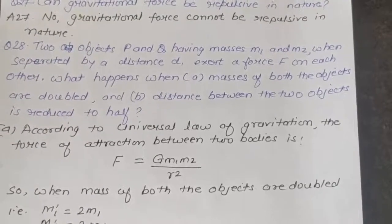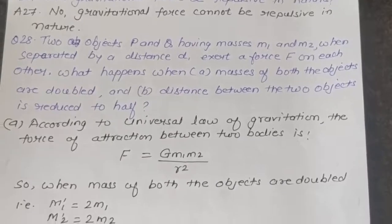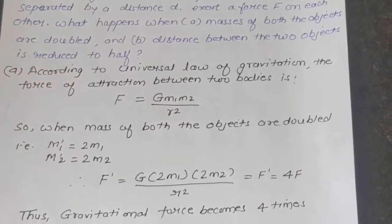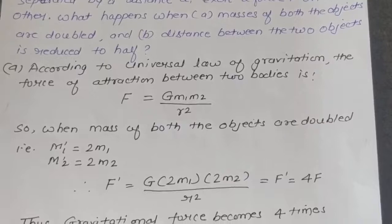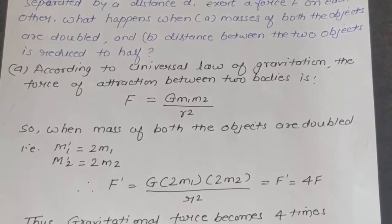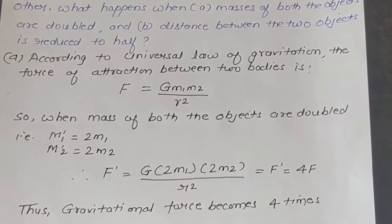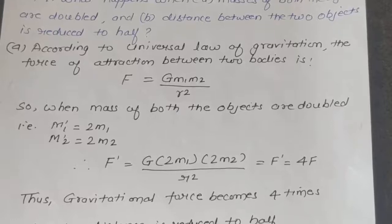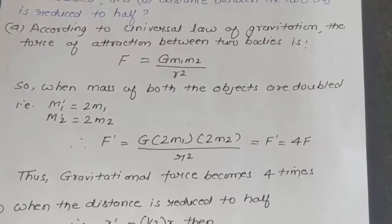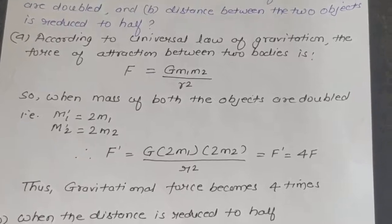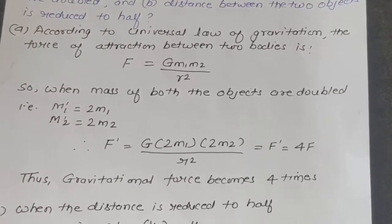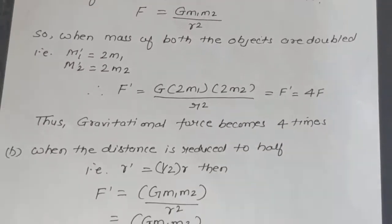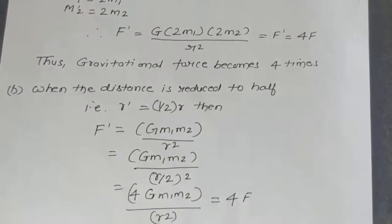Answer: According to the universal law of gravitation, F = G·M1·M2 / R². When the masses are doubled (M1' = 2M1, M2' = 2M2), the force becomes F' = G·(2M1)·(2M2) / R² = 4F. So the gravitational force becomes 4 times the original.